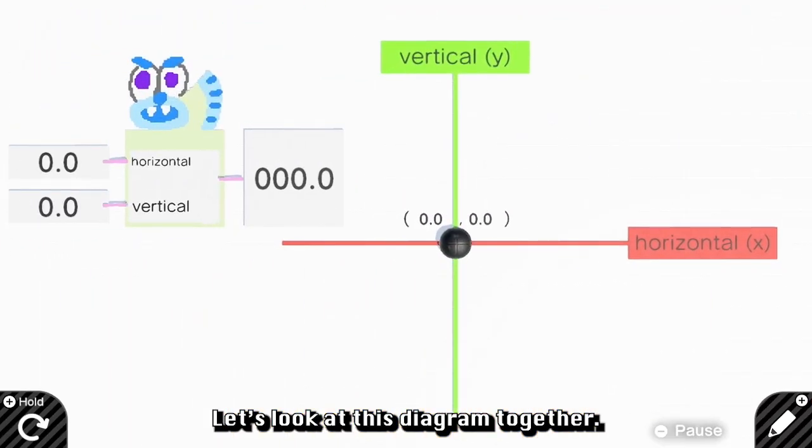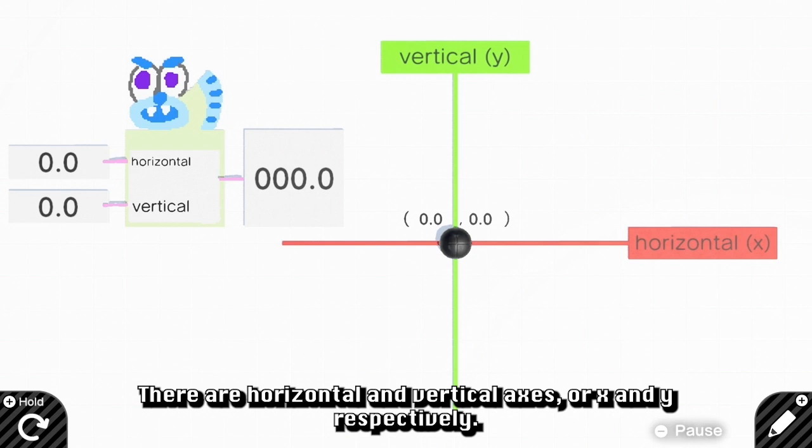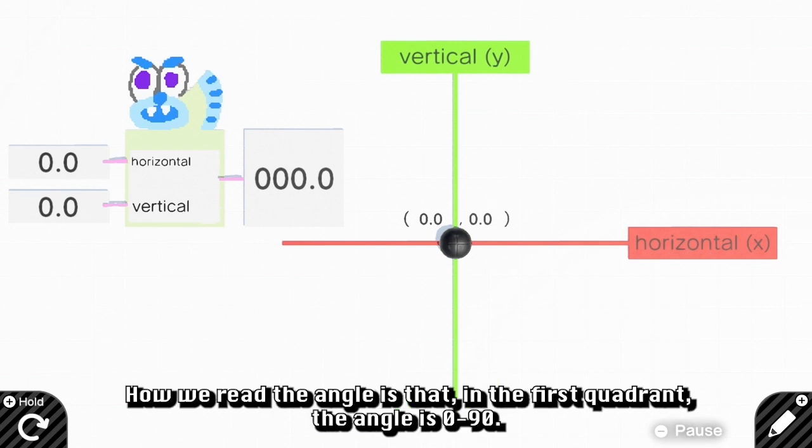Let's look at this diagram together. There are horizontal and vertical axes, or x and y respectively. How we read the anchor is that in the first quadrant, the anchor is from 0 to 90.